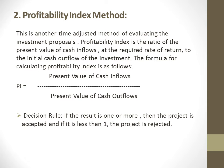Another time-adjusted method is the Profitability Index, also known as the Benefit-Cost Ratio. It is the ratio of the present value of cash inflows at the required rate of return to the initial cash outflow of the investment. The formula for PI equals present value of cash inflows divided by present value of cash outflows. If the PI is 1 or more, the project is accepted; if it is less than 1, the project is rejected.